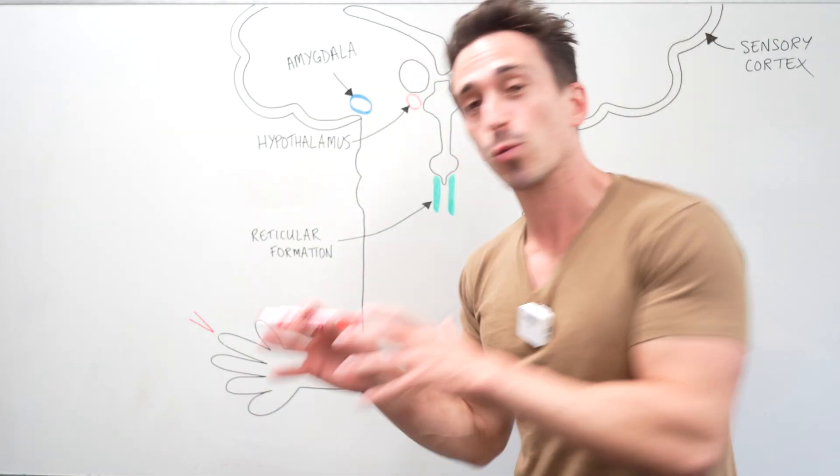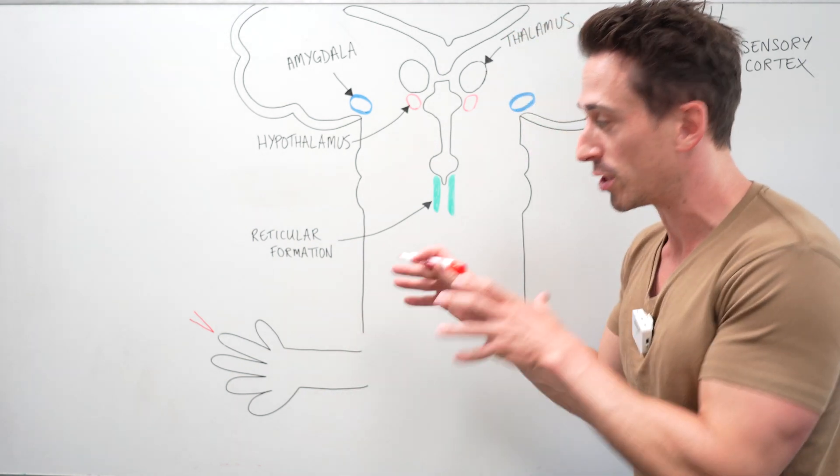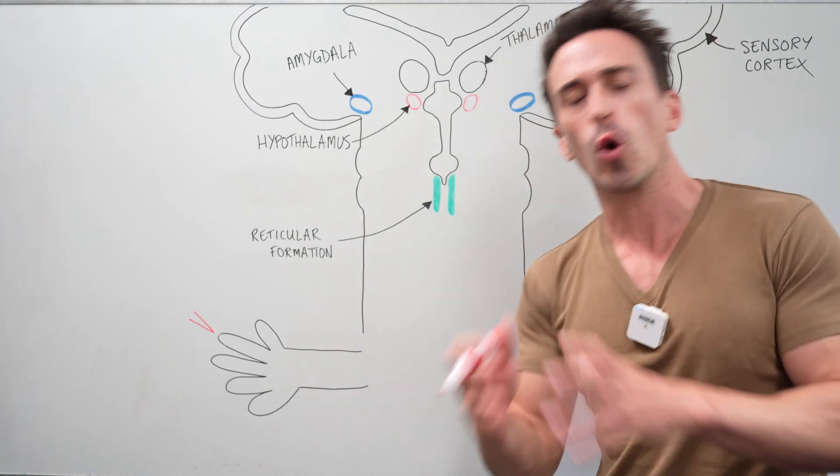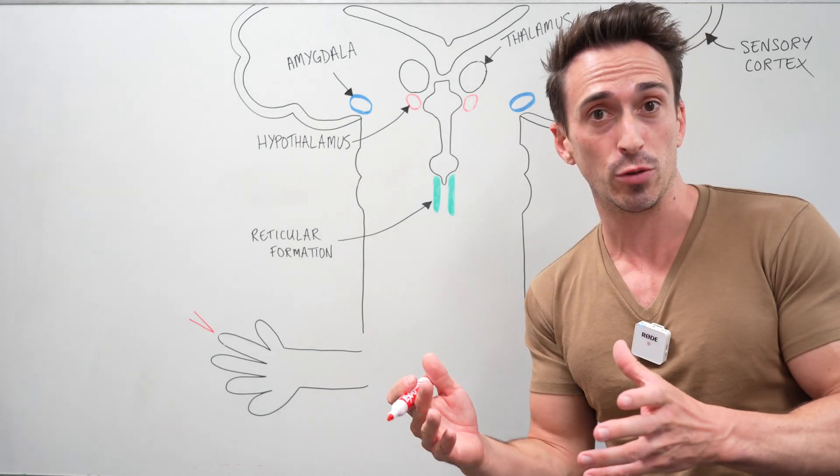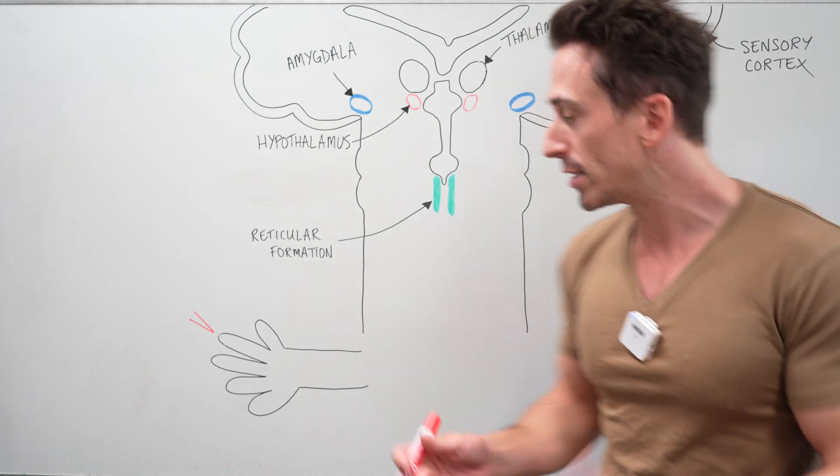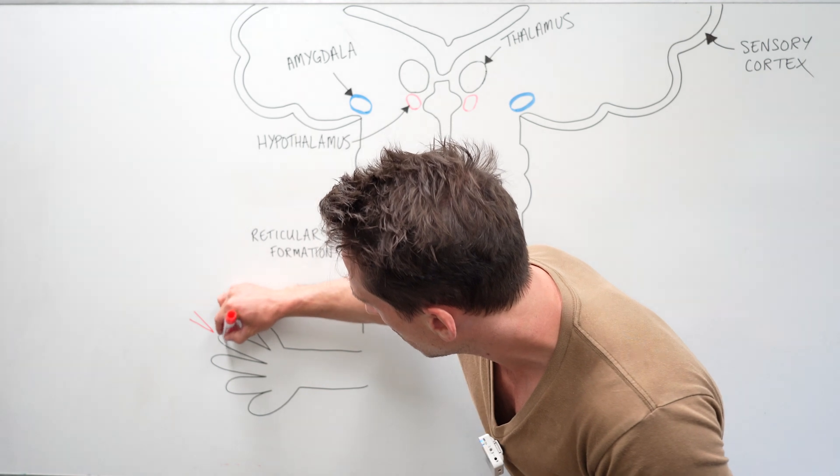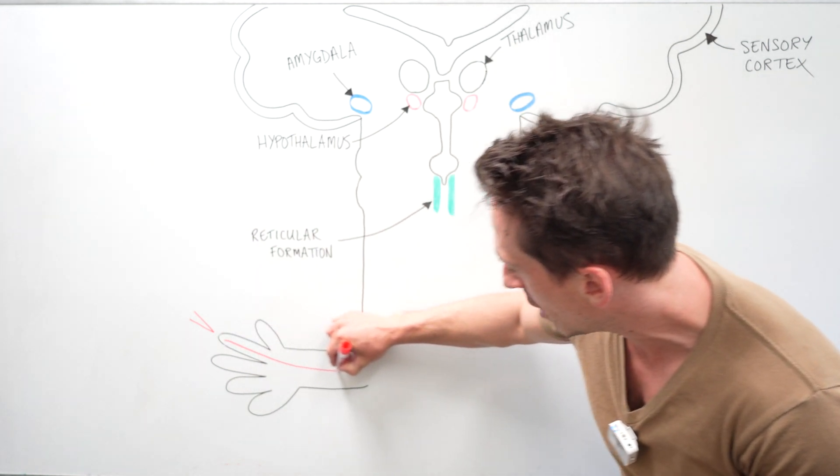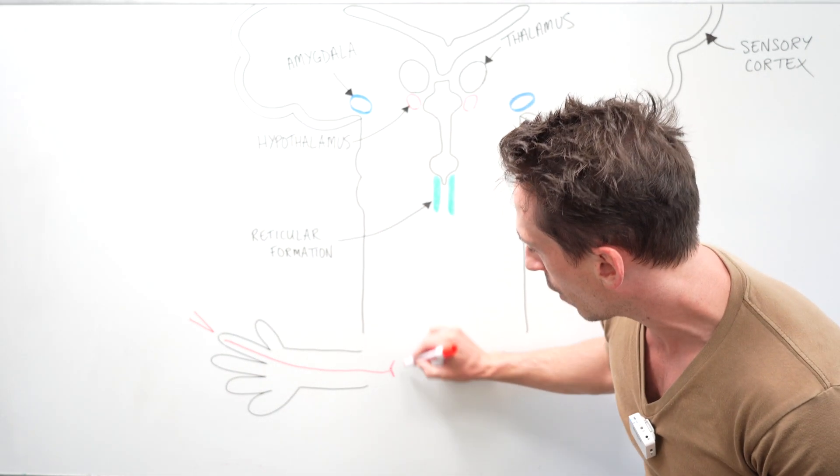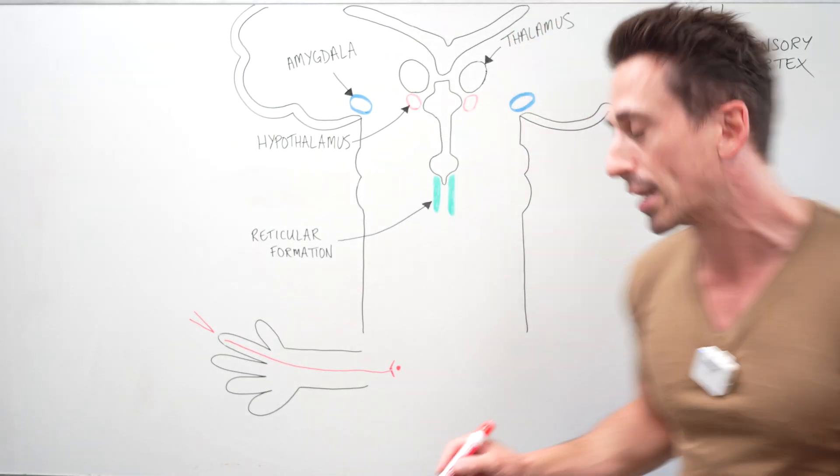Your hand has receptors that can detect this noxious stimuli and it thinks something is potentially or actually damaging the tissue. So these receptors called nociceptors take this signal, send it through neurons, down your hand, down your arm, into the spinal cord where it synapses or speaks to a second neuron.